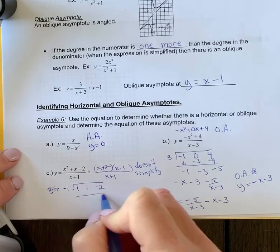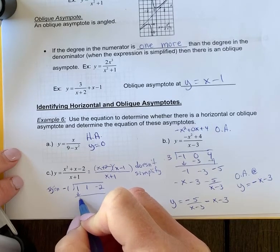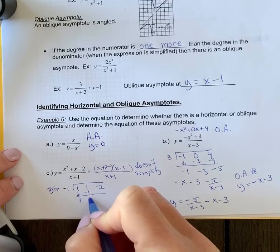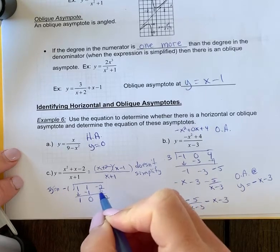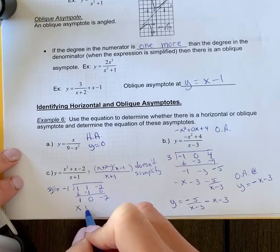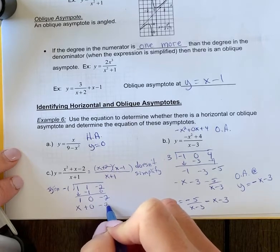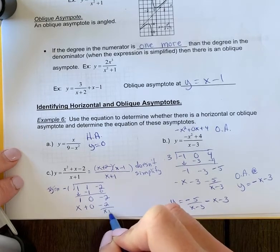Bring that down, bring that one down. We get negative one, add we get zero. Negative one times zero, you get zero. Add, you get negative two. So this is x plus zero minus two over (x+1).